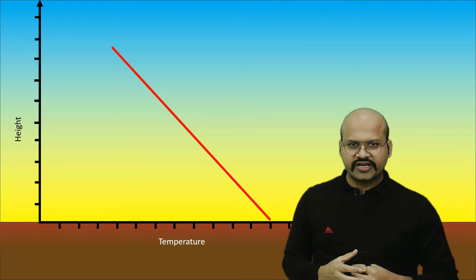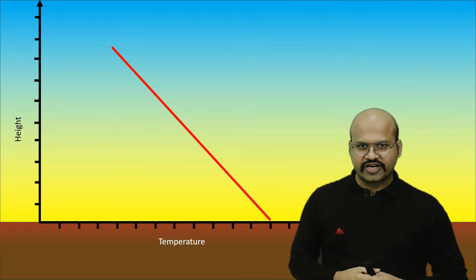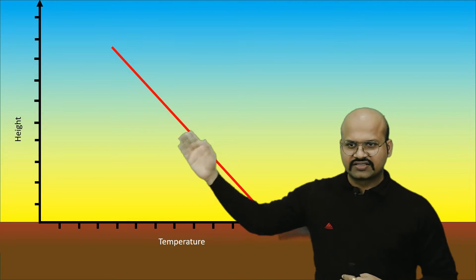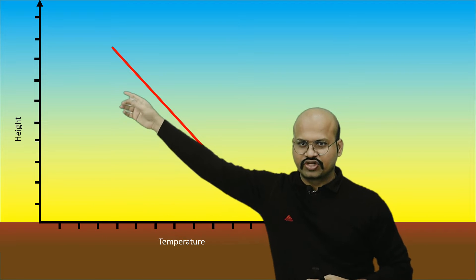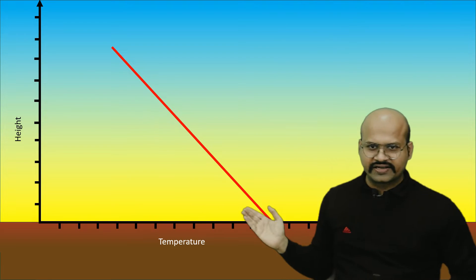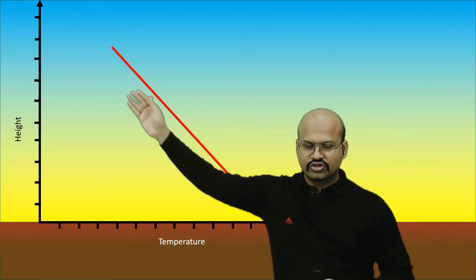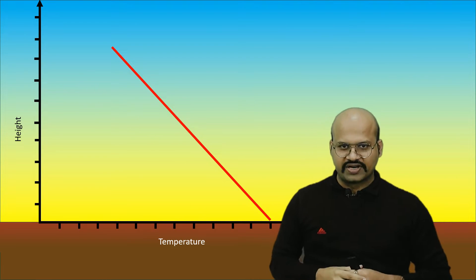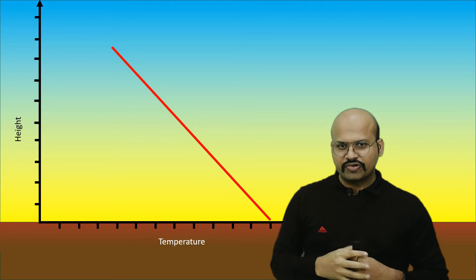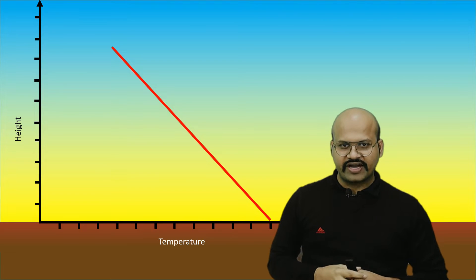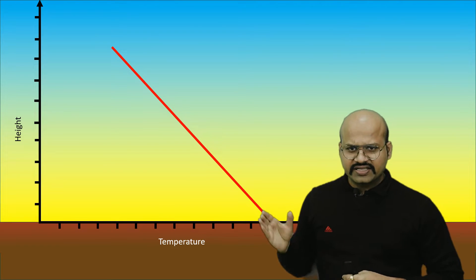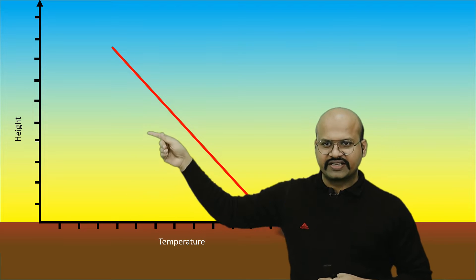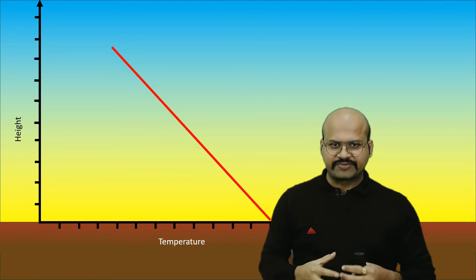Since the atmosphere is heated from below, the warmer part lies close to the ground surface and temperature decreases as we go up. If we plot the temperature curve of the atmosphere, we see it decreases with height. This decrease in temperature with increase in height is called the lapse rate.